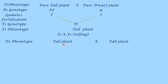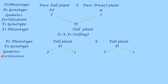P2 phenotype will be: tall plant crossed with tall plant. Their genotypes are capital T, small t and capital T, small t, as we are picking up from F1 directly. First parent will form two types of gametes: capital T and small t. The second parent will again form capital T and small t type of gametes. During fertilization, male and female gametes unite to form zygote. The four zygotes formed are: capital T capital T, capital T small t, capital T small t, and small t small t.